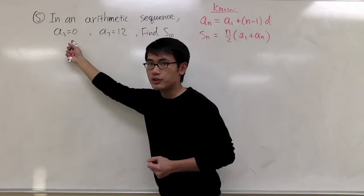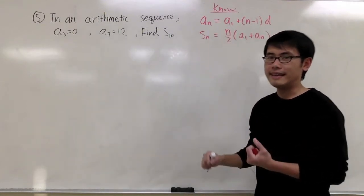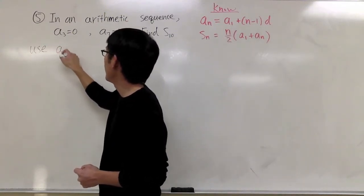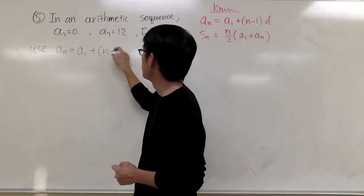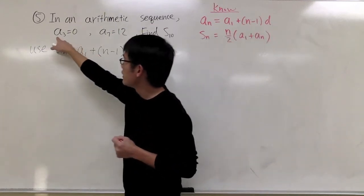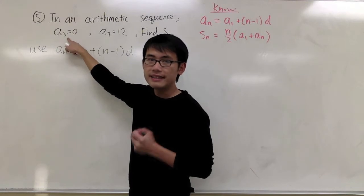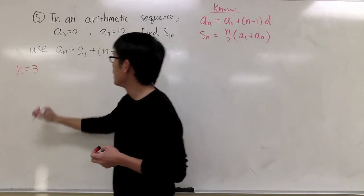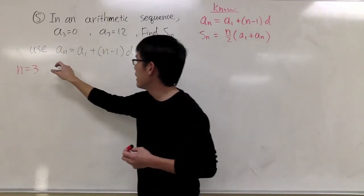Let's use these two pieces of information along with the first formula and try to figure out what a1 and a10 are. I will use the formula an = a1 + (n−1)·d. From the information that a3 is equal to 0, this means that n is equal to 3, so I can plug 3 into this general formula.